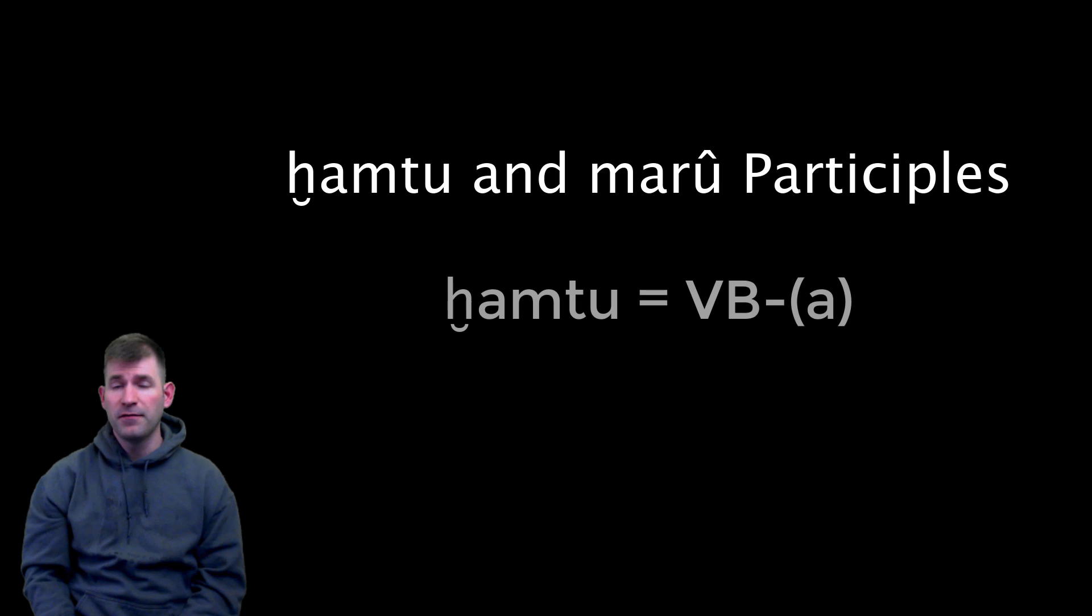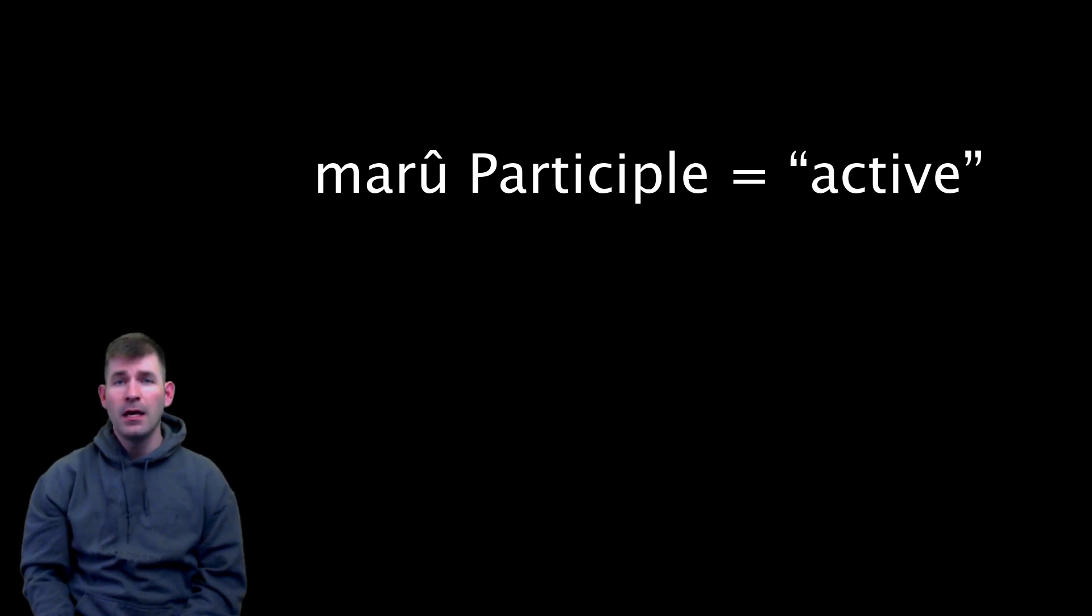A more detailed discussion on the non-finite forms will appear in a later grammar, but we need to know about two basic forms at this point: the ḫamtu and marû participles. We already know the ḫamtu participle, which will usually be the verbal base followed by an a-vowel and is often a passive participle. The marû participle, however, is the active participle in Sumerian. It is formed with the marû verbal base followed by an -ed.